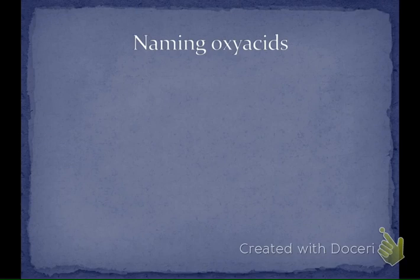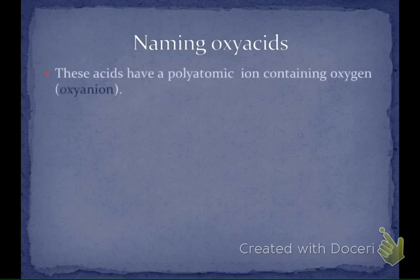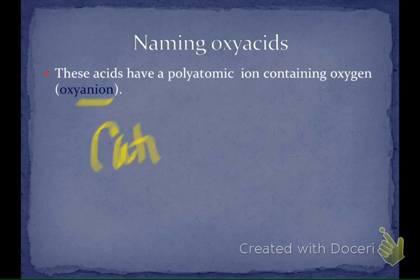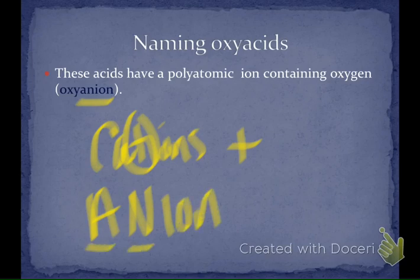Now for naming the oxy acids, you've got to have your polyatomic ion sheet out. If you've lost your polyatomic ion sheet, go over to the chemistry locker and look for a folder that says printable reference materials or printable tables. Oxy acids contain a polyatomic ion that has oxygen in it — called an oxyanion. Remember, anions have a negative charge; cations are ions with a positive charge. The oxyanions are polyatomic ions with negative charges.